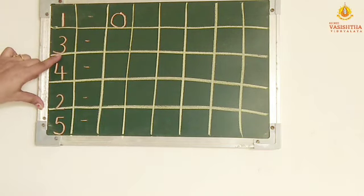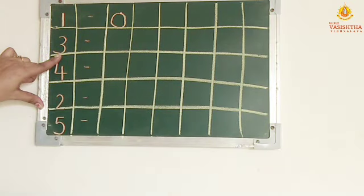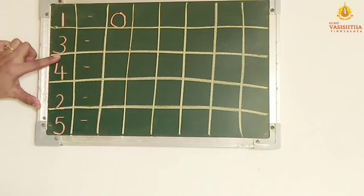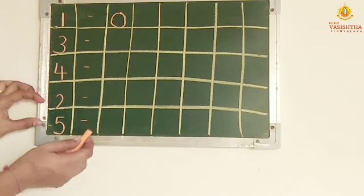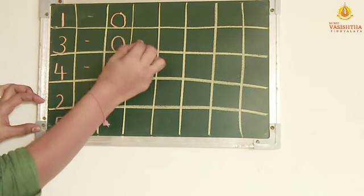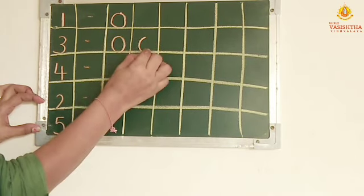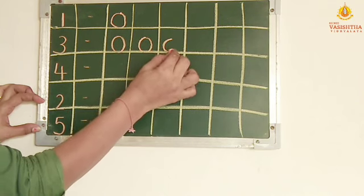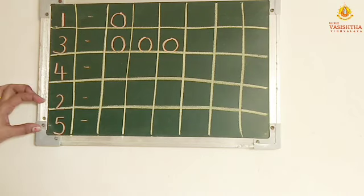Now children, this is number 3. So children, make 3 circles beside number 3. Starting. 1, 2, 3. Now, stop.